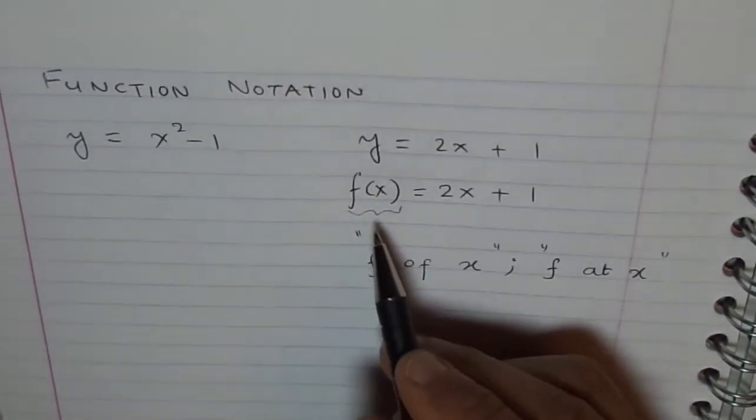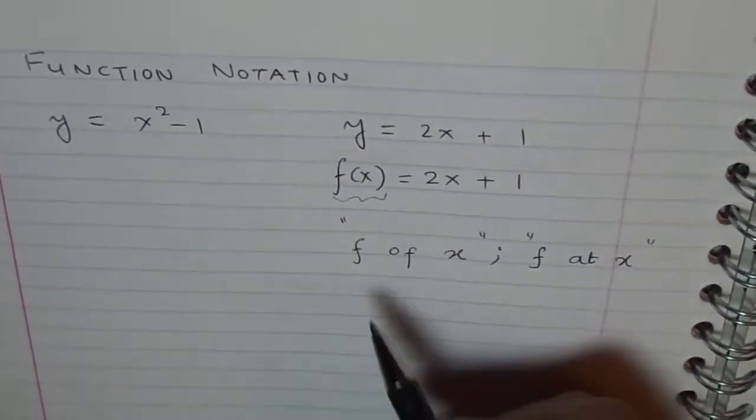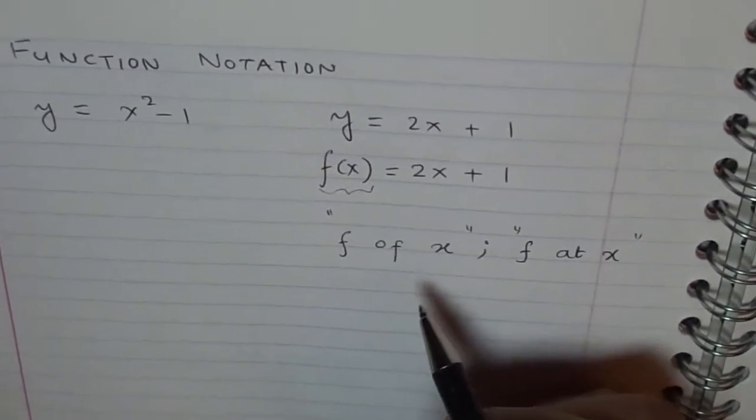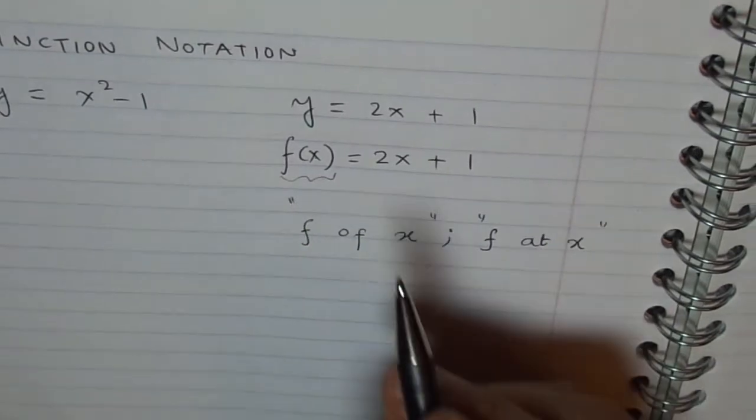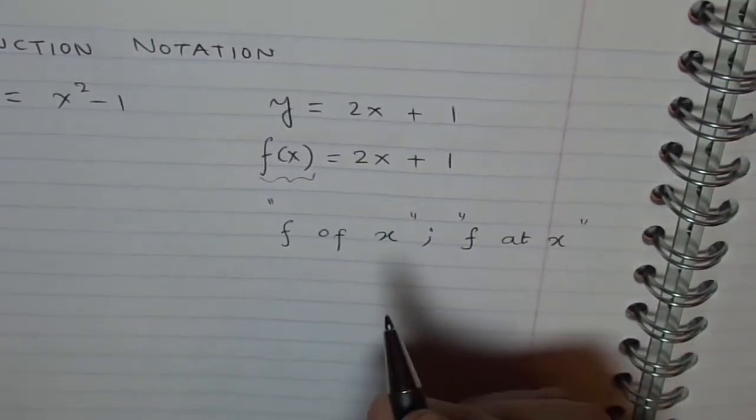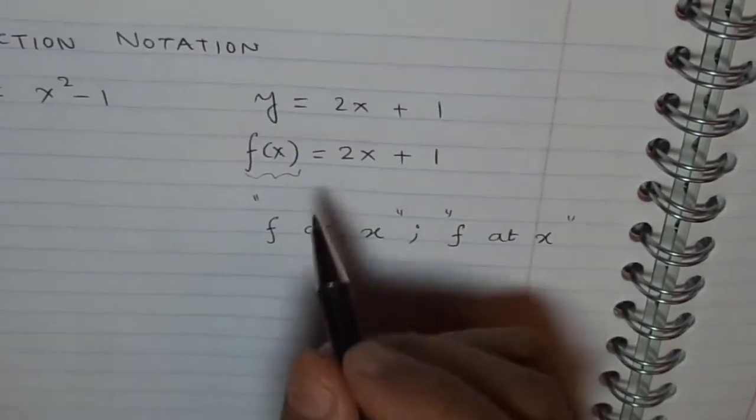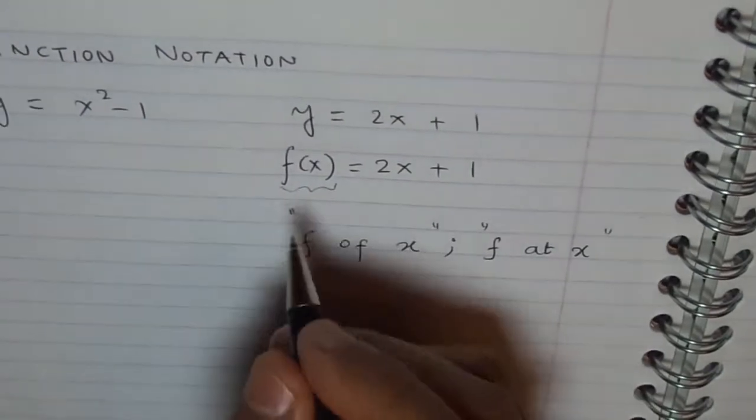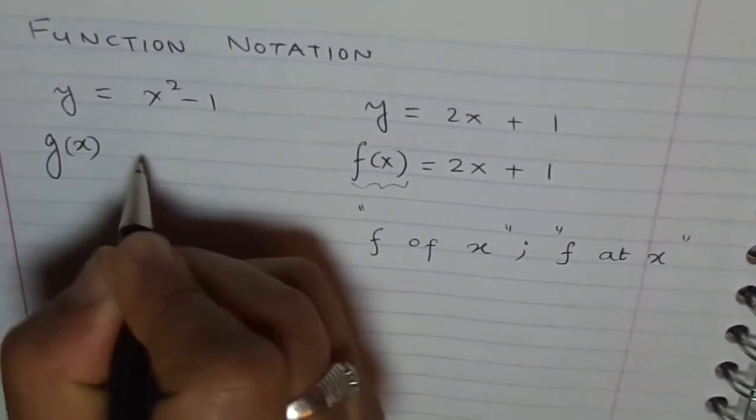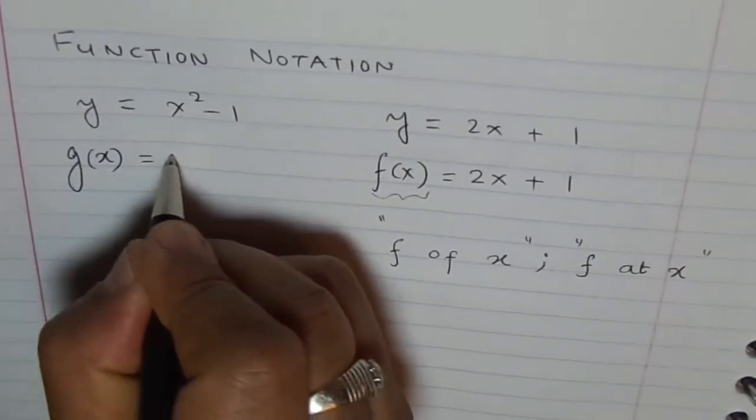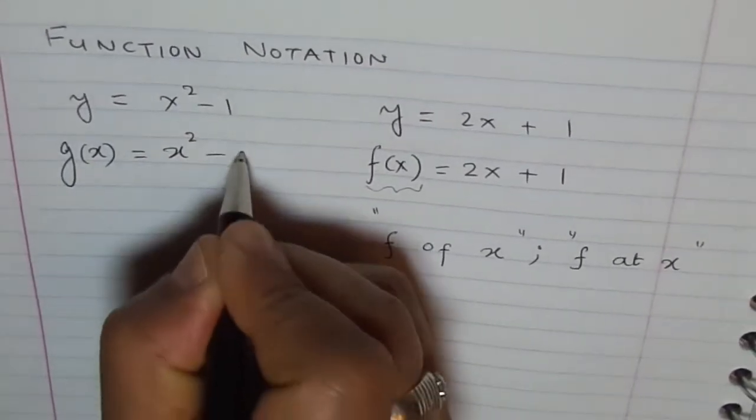Well, normally if there is one function, we give f for function as the default value. But we are not restricted to f. You could name it anything: a, b, c, d, whatever. Normally, the second equation if we consider, we can give it a name, let's say, g. Now, again, the argument is x. So we can call this as g of x equals x squared minus 1.